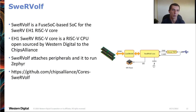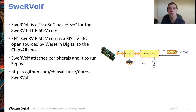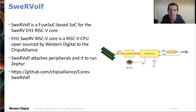SwerveWolf is the other FuseSoc project I'll discuss. It's a FuseSoc SoC for the SweRV EH1 core — a RISC-V core developed by Western Digital, now open sourced as part of the Chips Alliance project. SwerveWolf attaches peripherals like UART, SPI, and memory to the core, allowing you to run Zephyr and other embedded code on top of it — and again, this is the type of thing we could not have done with traditional proprietary ISAs.